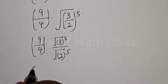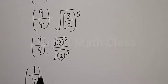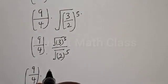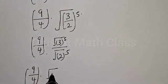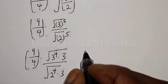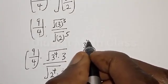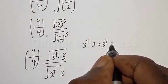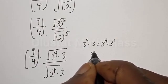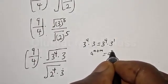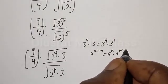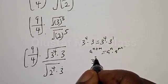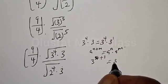We now have 9 over 4 multiplied by root 3 raised to the power 5 over root 2 raised to the power 5. The root 3 raised to the power 5 can be written as root 3 raised to the power 4, multiplied by root 3. Using the rule that 3 raised to the power n plus m equals 3 raised to the power n multiplied by 3 raised to the power m, we get 3 raised to the power 4 plus 1, which is 3 raised to the power 5.